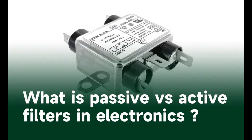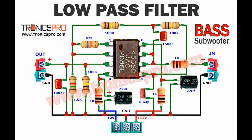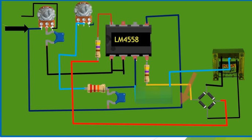Active vs. Passive Filters: Passive filters use only passive components like resistors, capacitors, and inductors. They do not amplify signals and are suitable for simple filtering tasks. Active filters use operational amplifiers (op-amps) along with passive components. They can amplify signals and offer better control over the frequency response, making them ideal for applications requiring a more refined or adjustable response. In summary, filters use frequency-dependent properties of capacitors, inductors, and resistors to create selective barriers for different parts of a signal.